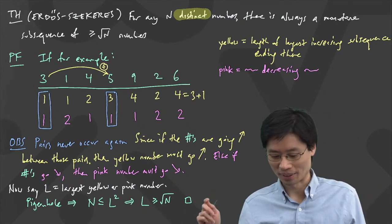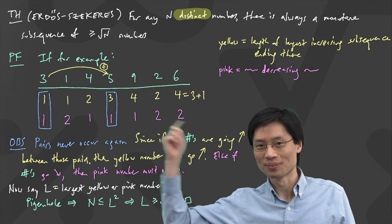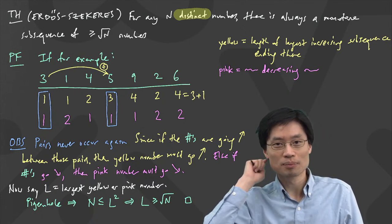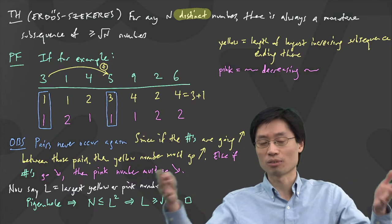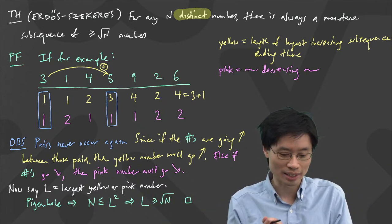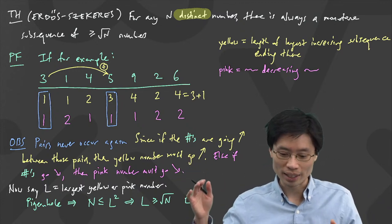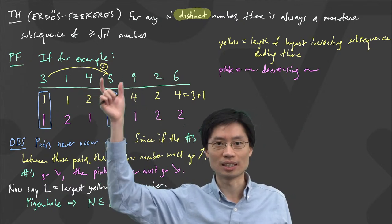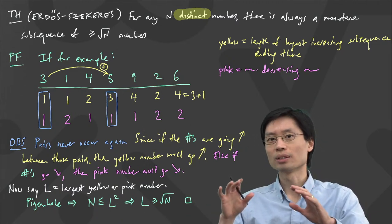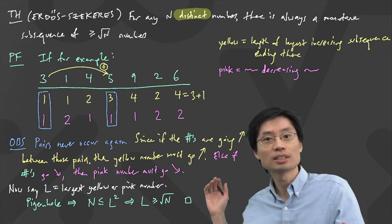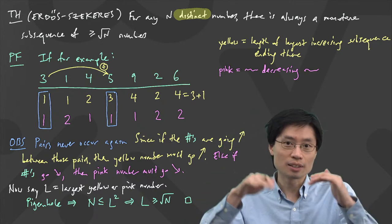Now we also know it's basically best possible, because of some construction from last time. A construction means a way of writing down a sequence of numbers where the longest monotone increasing or decreasing was only up to square root of n-ish. It turns out you can be even more precise. There's another version of this theorem where you don't always ask for a monotone subsequence of some particular length — instead, there's a version where you say suppose I care about monotone increasing subsequences of length s or monotone decreasing subsequences of length t, with a trade-off between them.